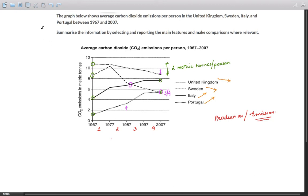Hello and welcome to an essay discussion. It's academic task one for IELTS and the question is the graph below shows average carbon dioxide emissions per person in the United Kingdom, Sweden, Italy and Portugal. These are four countries.